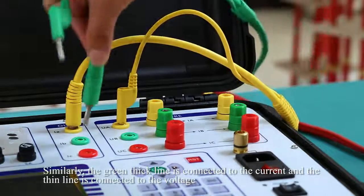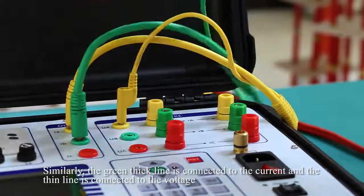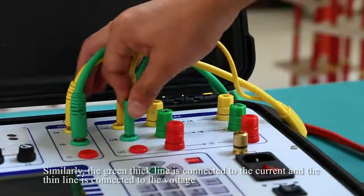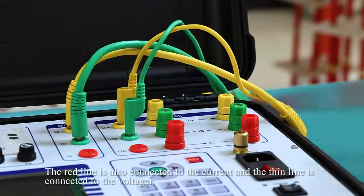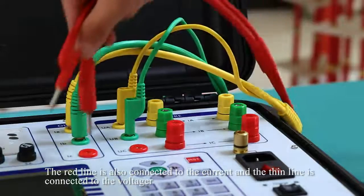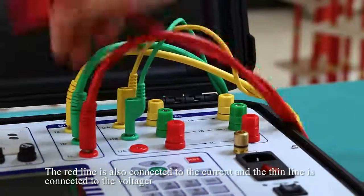Similarly, the green thick wire is connected to the current and the thin wire is connected to the voltage. The red wire is also connected to the current and the thin wire is connected to the voltage.